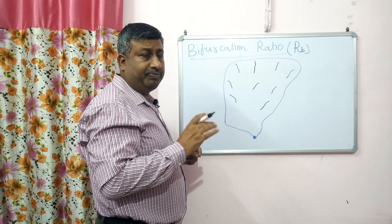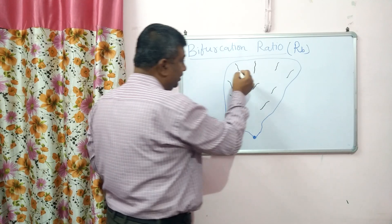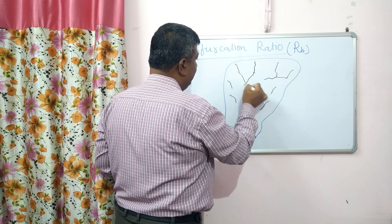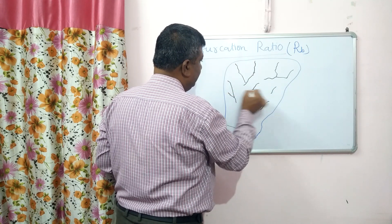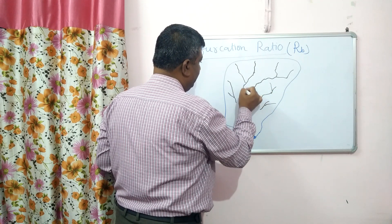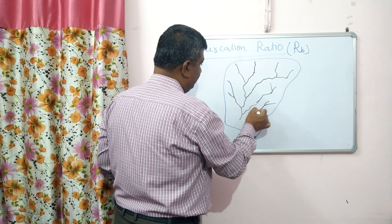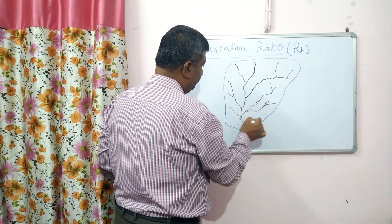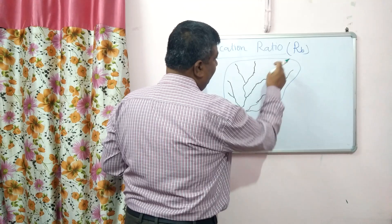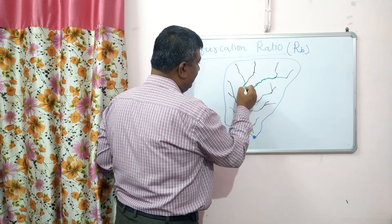First order streams are small, initially started, unbranched streams. These first order streams join together to make a larger stream. When they join in this fashion, this is the drainage pattern. The first order streams make a second order stream.